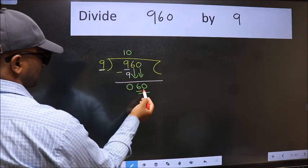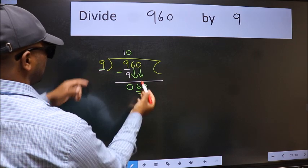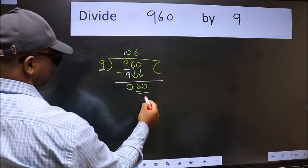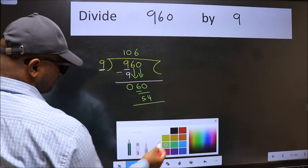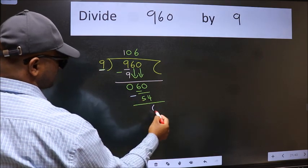Now 60. A number close to 60 in 9 table is 9 times 6, 54. Now we should subtract. We get 6.